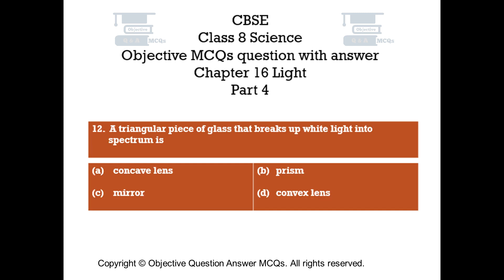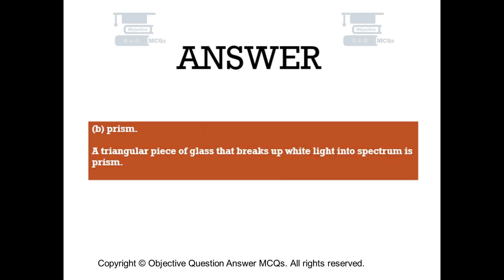Question number 12. A triangular piece of glass that breaks up white light into a spectrum is: Option A concave lens. Option B prism. Option C mirror. Option D convex lens. The right answer is option B: prism. A triangular piece of glass that breaks up white light into a spectrum is a prism.